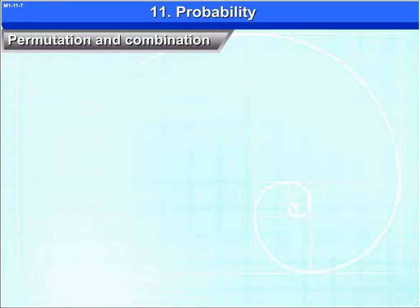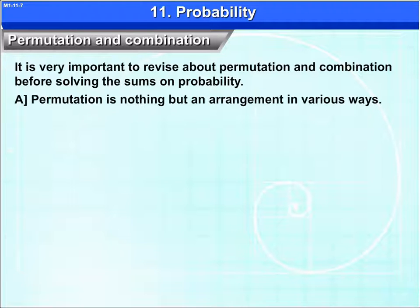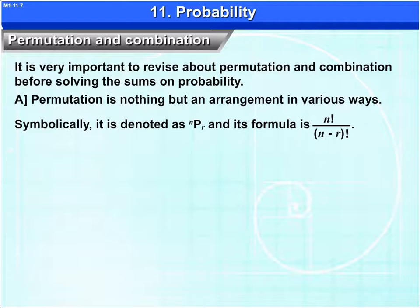Permutation and combination. It is very important to revise about permutation and combination before solving the sums on probability. Permutation is nothing but an arrangement in various ways. Symbolically, it is denoted by nPr and its formula is n factorial upon n minus r factorial.